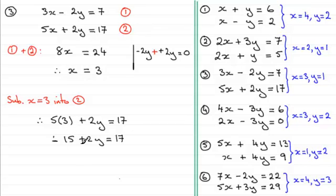So if I subtract 15 from both sides we end up with 2y equaling 17 take away 15 which is 2. Divide both sides by 2 and I end up with y equaling 2 divided by 2 which is 1.